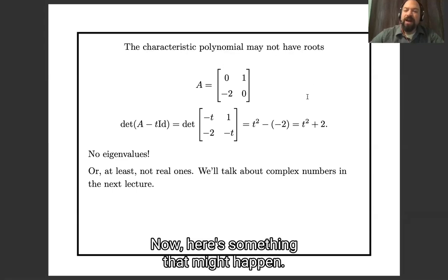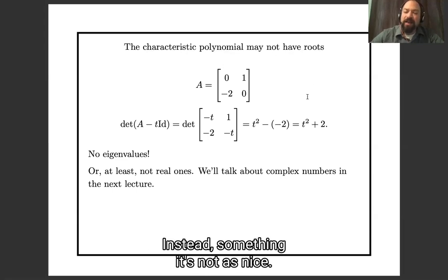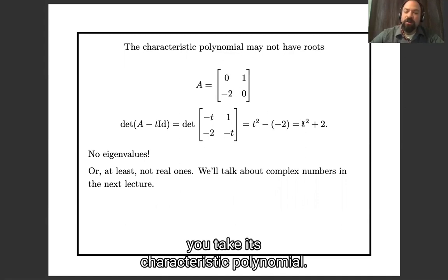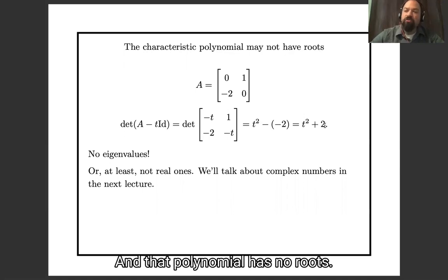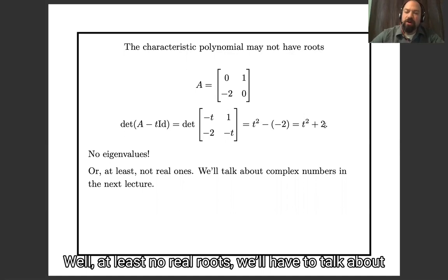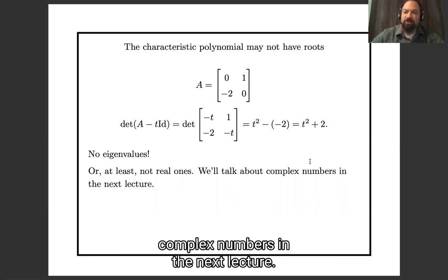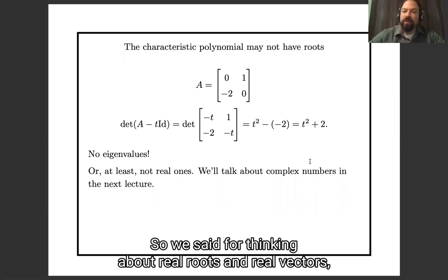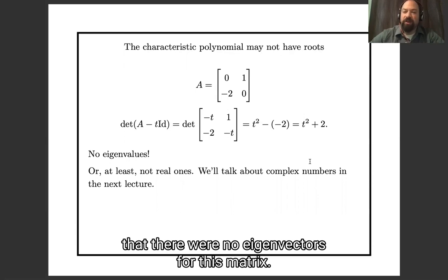Here's something that might happen instead — something that's not as nice. If you take this matrix and compute its characteristic polynomial, you get t squared plus 2, and that polynomial has no real roots. We'll talk about complex numbers in the next lecture. But if we're thinking about real roots and real vectors, there are no eigenvectors for this matrix.